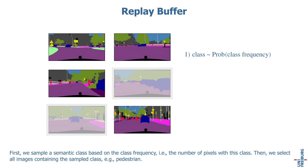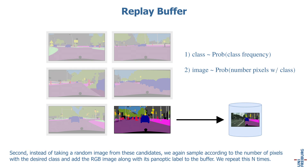First, we sample a semantic class based on the class frequency, i.e., the number of pixels with this class. Then, we select all images containing the sampled class, e.g., Pedestrian. Second, instead of taking a random image from these candidates, we again sample according to the number of pixels with the desired class, and add the RGB image along with its panoptic label to the buffer. We repeat this n times.